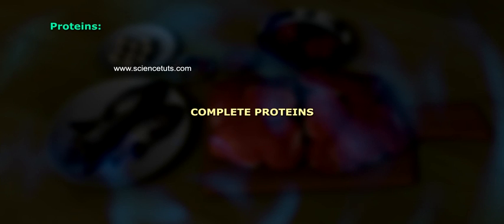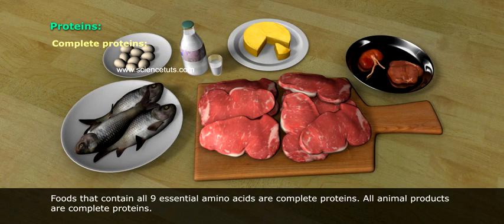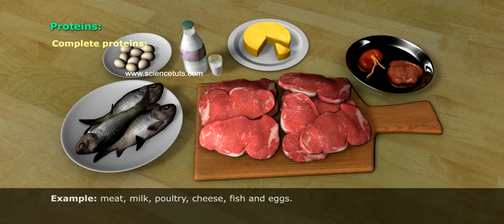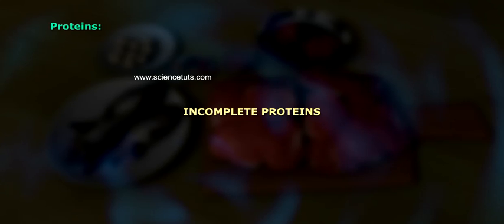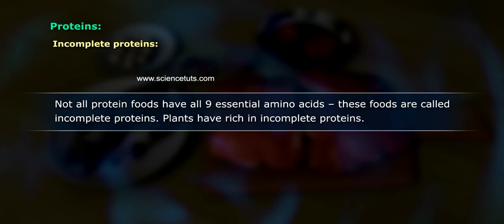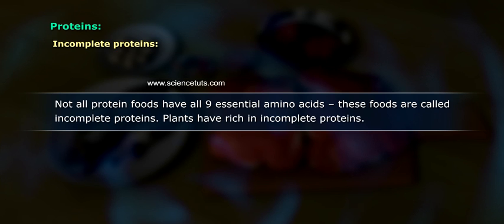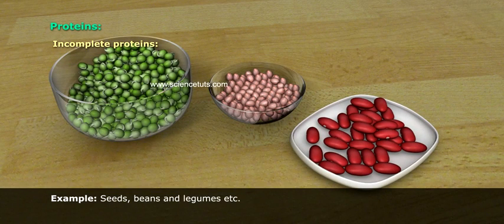Complete proteins are foods that contain all 9 essential amino acids. All animal products are complete proteins — examples include meat, milk, poultry, cheese, fish, and egg. Incomplete proteins are foods that do not have all 9 essential amino acids. Plants are rich in incomplete proteins — examples include seeds, beans, legumes, etc.